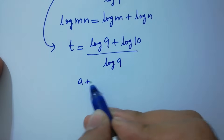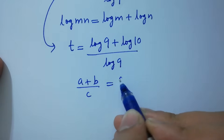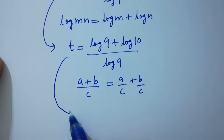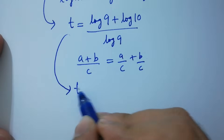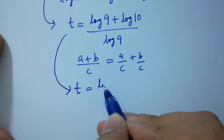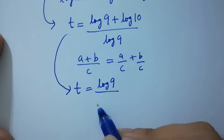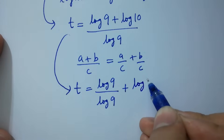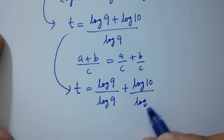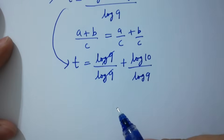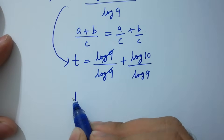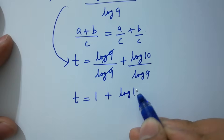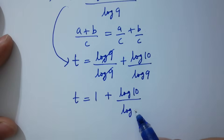Using the identity (a plus b) over c equals a over c plus b over c, we get t equals log 9 over log 9 plus log 10 over log 9. Log 9 over log 9 cancels to give t equals 1 plus log 10 over log 9.